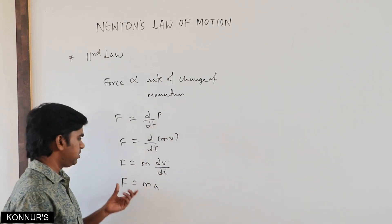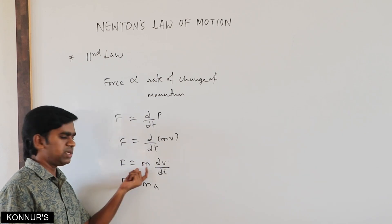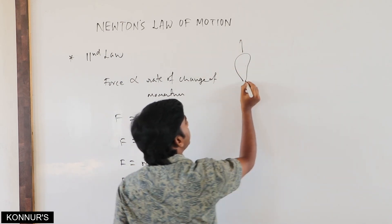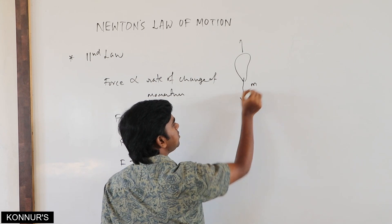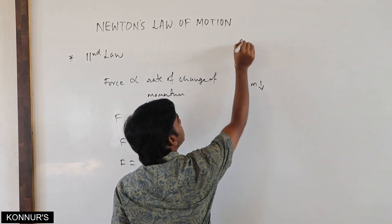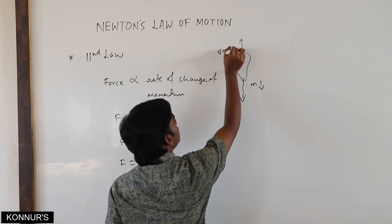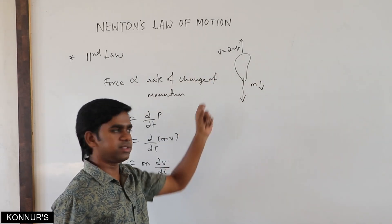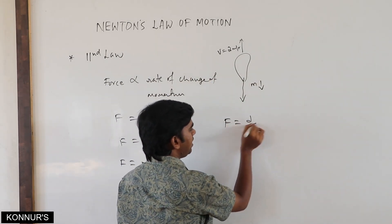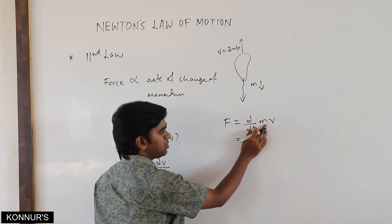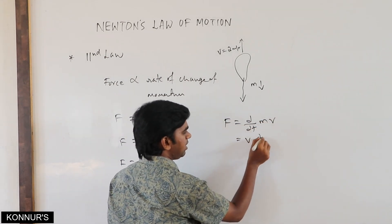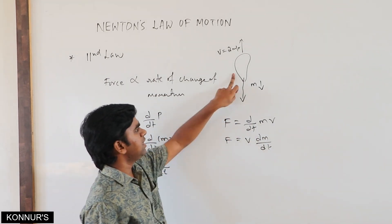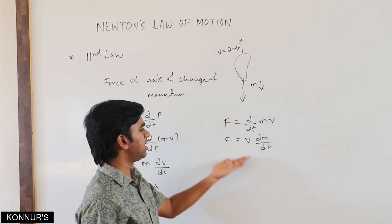It doesn't mean that velocity is always the only thing changing — sometimes mass may also change. Suppose you have a balloon moving when air comes out; mass is decreasing while velocity is constant. In this case force equals v times dm/dt. The actual formula applying the product rule is: F equals m·(dv/dt) plus v·(dm/dt). If velocity is constant the first term is zero; if mass is constant the second term is zero.